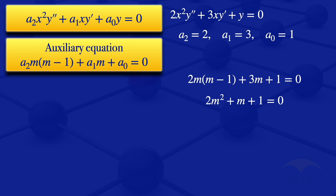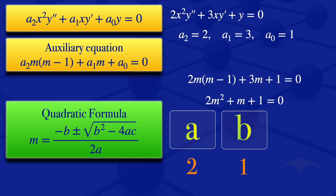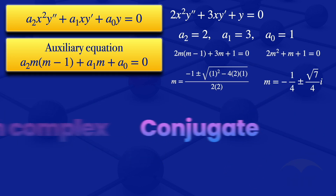This equation cannot be factorized, so we use the quadratic formula: m equals (minus b plus or minus the square root of b squared minus 4ac) divided by 2a. Here a equals 2, b equals 1, c equals 1. So m equals (minus 1 plus or minus the square root of 1 minus 8) divided by 4, giving m equals minus 1/4 plus or minus (root 7 divided by 4)i. The auxiliary equation has complex conjugate roots.